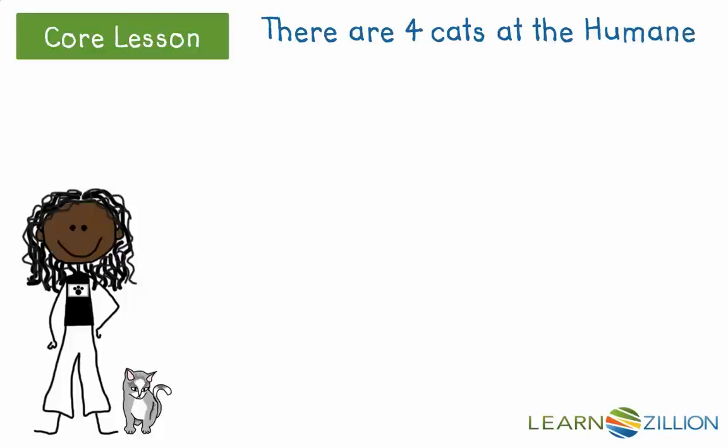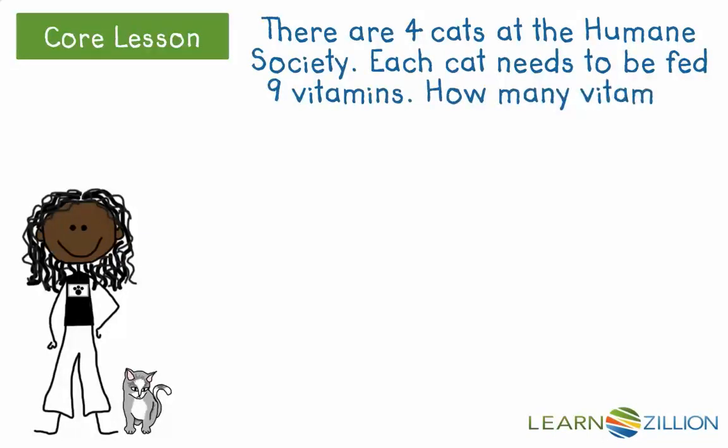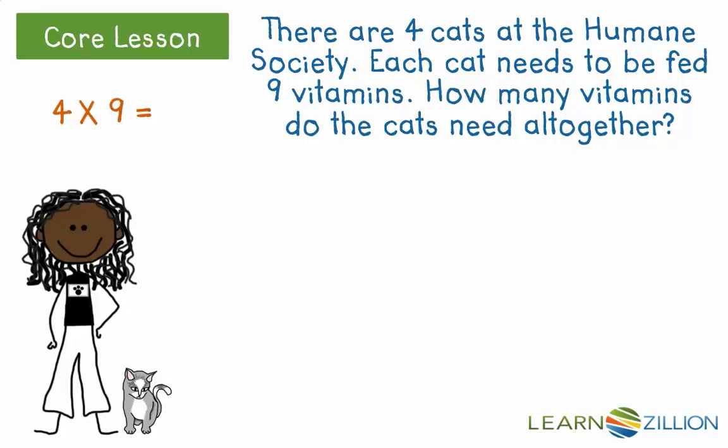There are 4 cats at the Humane Society. Each cat needs to be fed 9 vitamins. How many vitamins do the cats need altogether? So, our multiplication number sentence, based on the word problem, is 4 times 9.